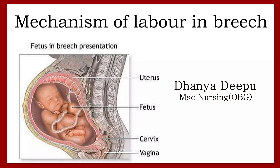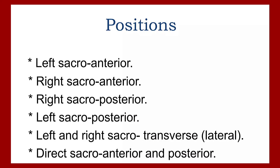Without wasting time, we can move on to today's topic: mechanism of labor in breech presentation. In case of breech presentation, we have six positions. The first one is left sacro anterior, second is right sacro anterior, third is right sacro posterior, fourth is left sacro posterior, next is left and right sacro transverse (lateral), and last is direct sacro anterior and posterior. These are the six positions we can expect in breech presentation.